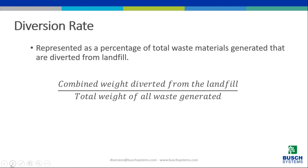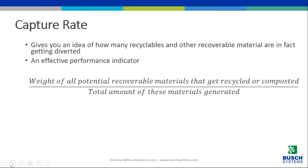Diversion rate is the most popular metric — represented as a percentage, it's the total waste materials generated that are diverted from the landfill. Some people also call it recovery rate. It's calculated by dividing the combined weight of all materials that are recycled, composted, reused, or otherwise diverted from landfill by the total weight of all waste generated. Capture rate gives you a good idea of how many recyclables and other recoverable materials are actually getting diverted — calculated by dividing the weight of potentially recoverable materials actually being recycled or composted by the total of those materials generated.